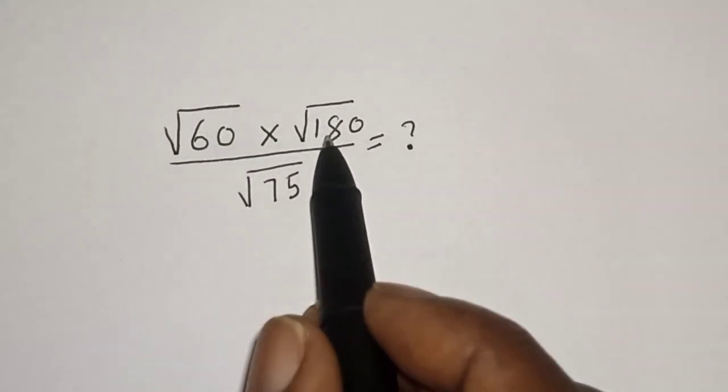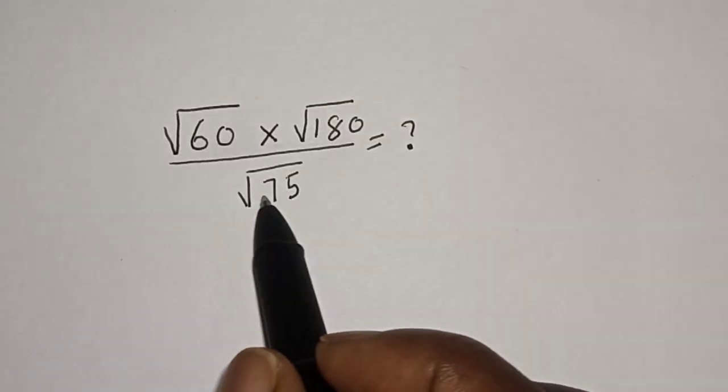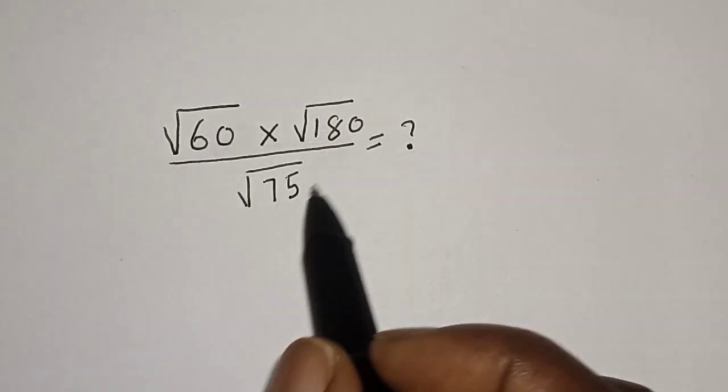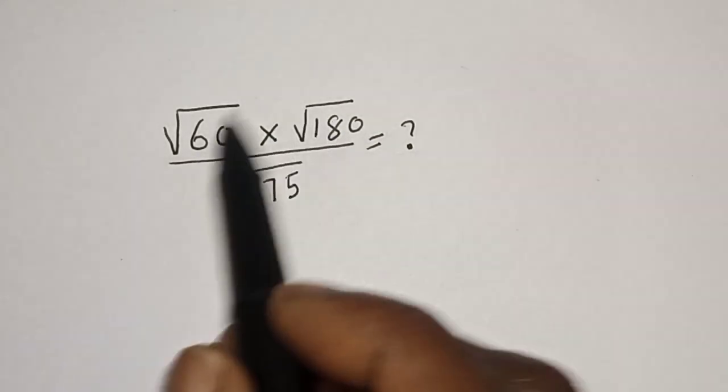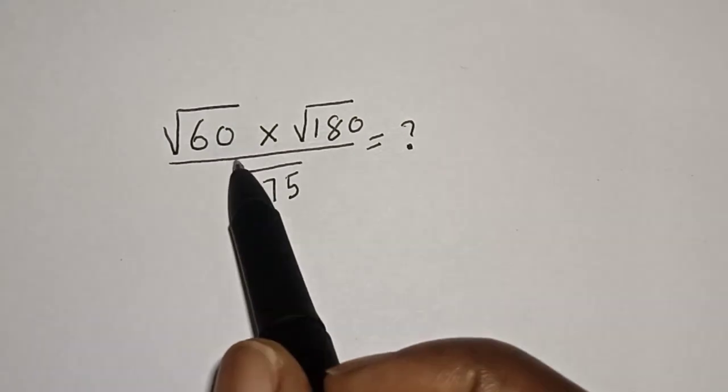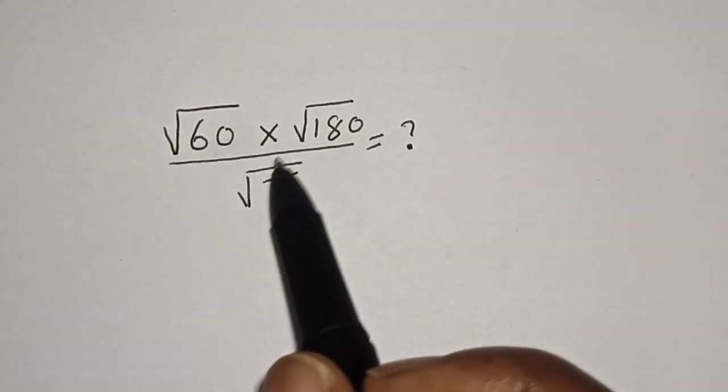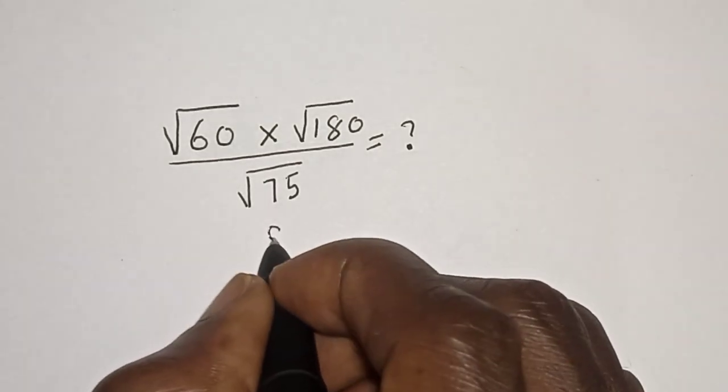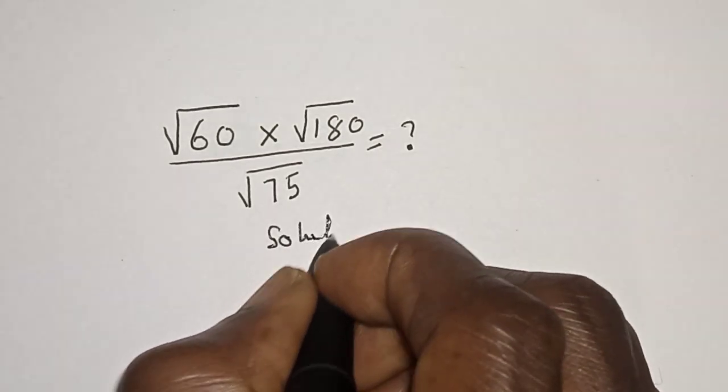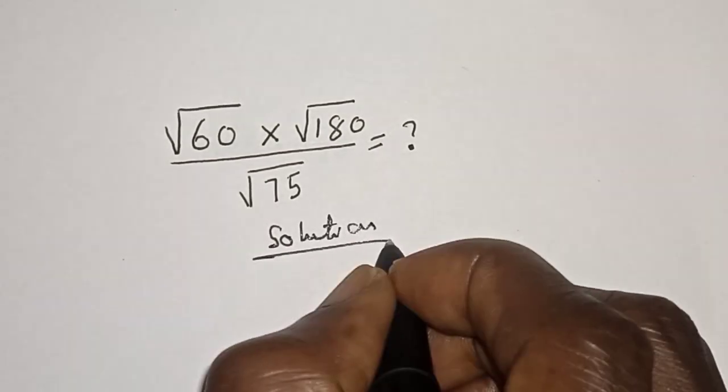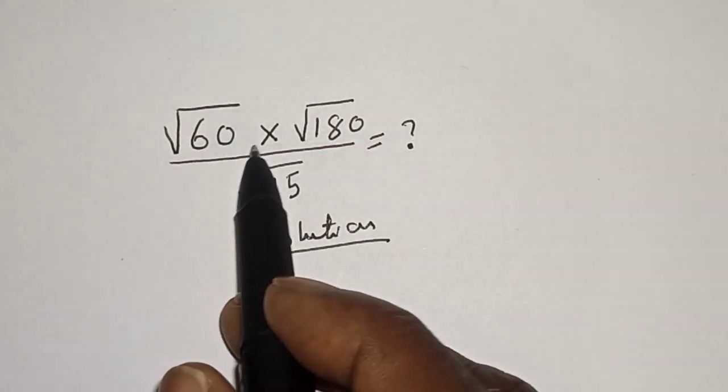Square root of 60 multiplied by square root of 180 over square root of 75 is equal to what? Hi everyone, welcome to my class. In this class we want to evaluate this square root problem, but before we proceed please don't forget to like, share, comment and subscribe.